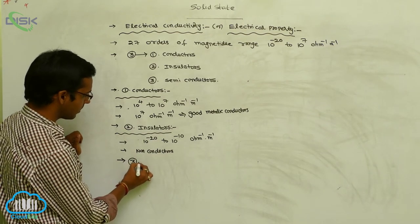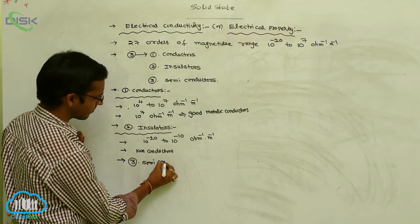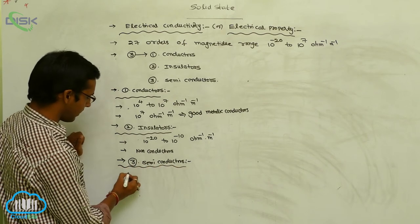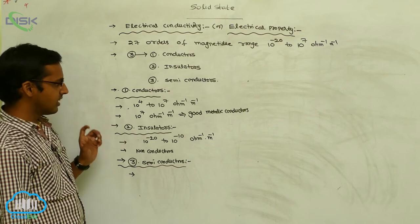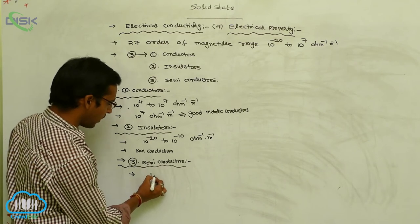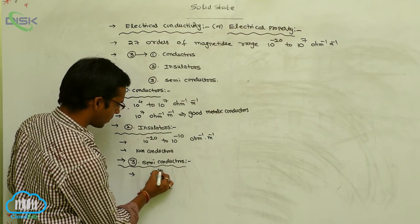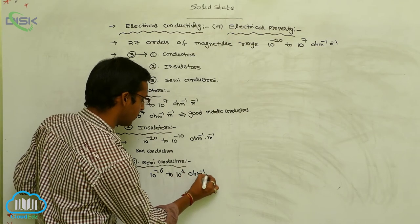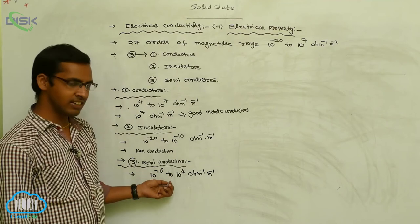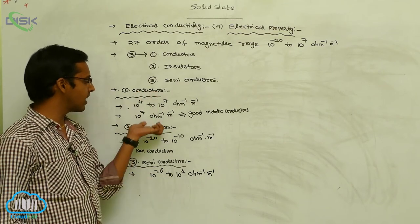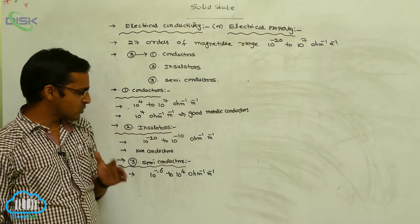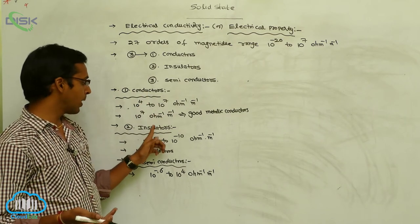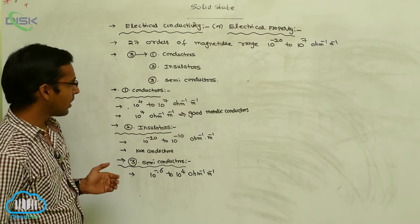The third type is semiconductors. The semiconductor conductivity range is 10⁻⁶ to 10⁴ Ohm⁻¹ meter⁻¹. This range is in between conductors and insulators. Semiconductors show conductivity, but very less compared to conductors and more compared to insulators.